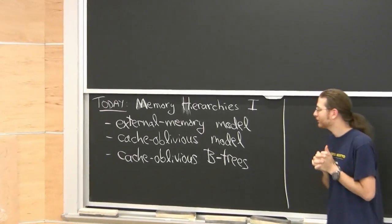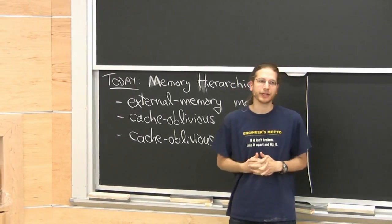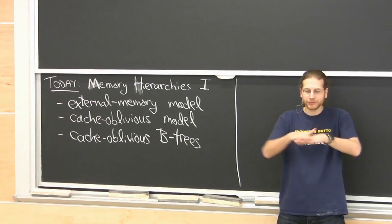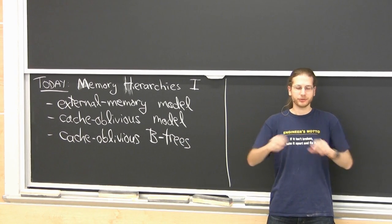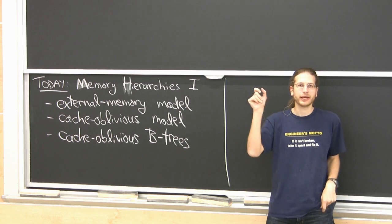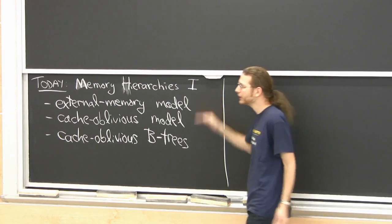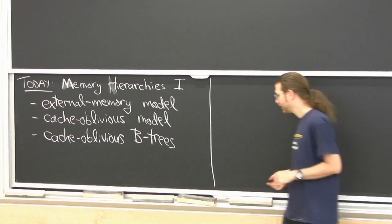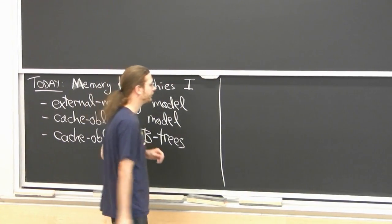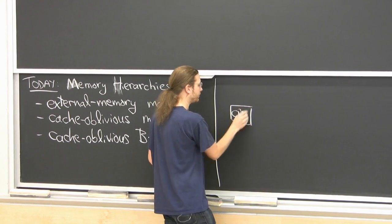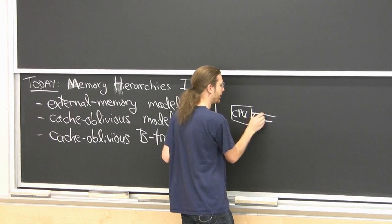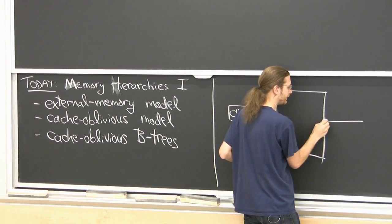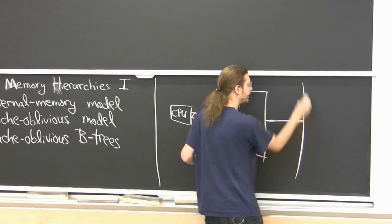Today we start a new section in advanced data structures: data structures for memory hierarchy. While almost all data structures think about memory as a flat thing — in the RAM model, you've got a giant array and can access the i-th element in constant time — the memory hierarchy admits the reality of almost all computers since the 80s, which have caches. The idea is you have your CPU connected with a very high bandwidth channel to a relatively small cache, which is connected by a relatively narrow bandwidth channel to a really big memory.